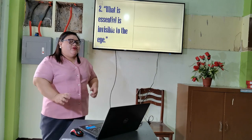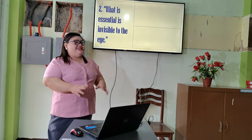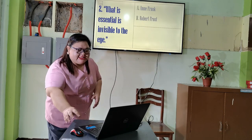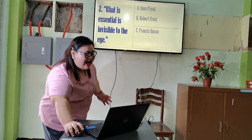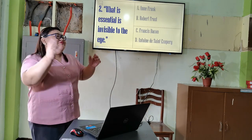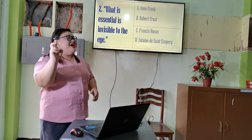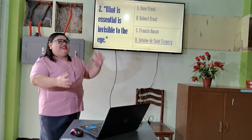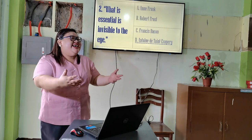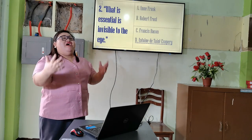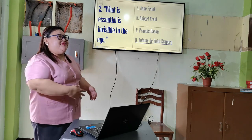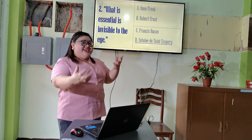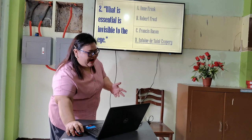Number two: 'What is essential is invisible to the eyes.' Who said this? Was it A: Anne Frank, B: Robert Frost, C: Francis Bacon, or D: Antoine de Saint-Exupéry? The correct answer is D — Antoine de Saint-Exupéry. This is from the famous novel by this French author titled 'The Little Prince.' If you have time, you can read this very interesting novel.